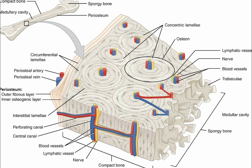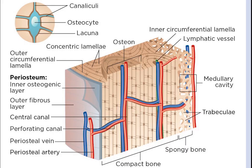The mineralized matrix of bone tissue has an organic component of mainly collagen called ossein, and an inorganic component of bone mineral made up of various salts. Bone tissue is mineralized tissue of two types: cortical bone and cancellous bone.